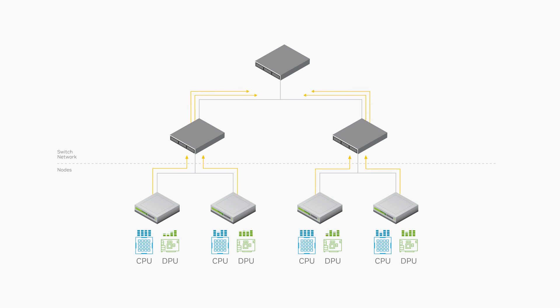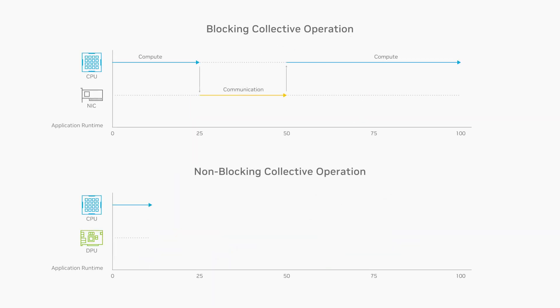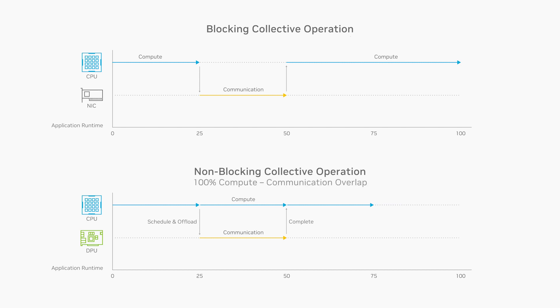By adding a Bluefield DPU to the system, the compute and communication can run in parallel. Now, the application can schedule the collective operation and then continue its computation, while the DPU performs the communication in the background. This provides peak overlap of the processes and reduces the application's communication latency to nearly zero.